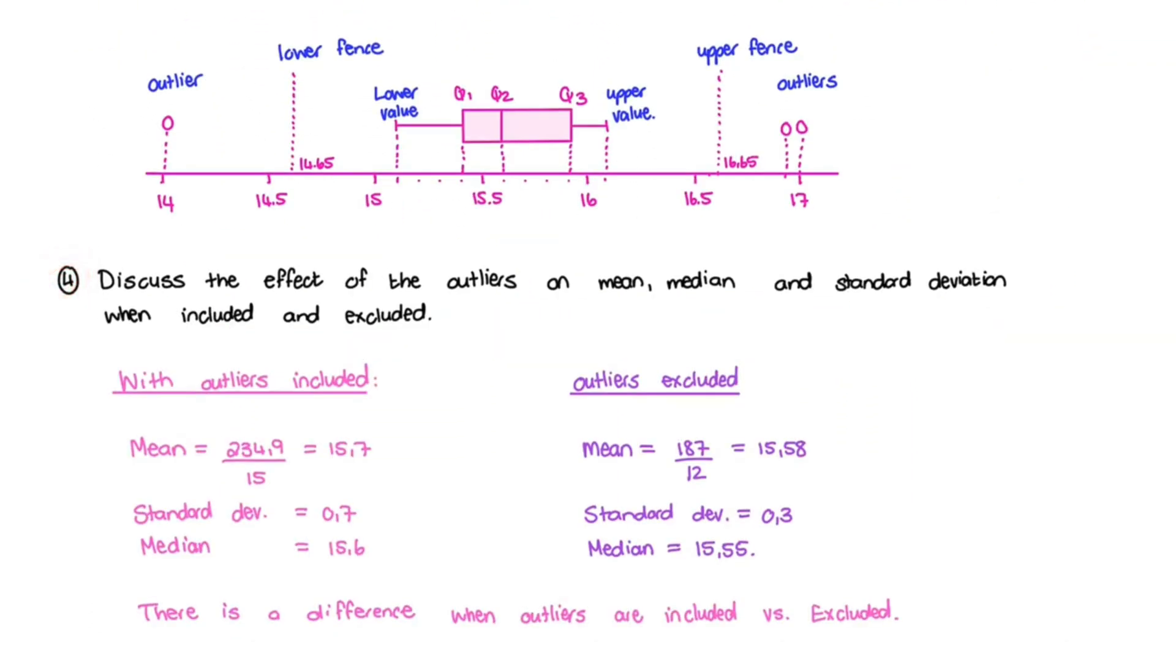And the last question is discuss the effect of the outliers on the mean, median, and standard deviation. So in our first video, we learned how to find the mean, the median, and we also have learned how to find the standard deviation using our calculators. And for this question, we'll work out when it's included and excluded. So when I have all the data points, that's with the 14 and the upper two values, I have 15 data points in total. So the mean is all the values added together, divided by 15, and that is 15.7. But for the mean, with the outliers excluded, that means I would take out the 14 and 16.9 and 17. Notice, now I only have 12 values instead of 15, because I leave out those three values. And my total is also smaller because I do not add them up. And can you see, the mean is slightly lower now.